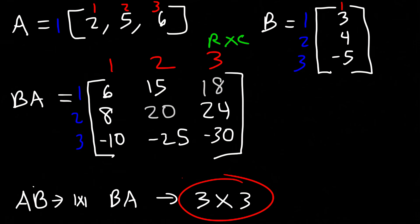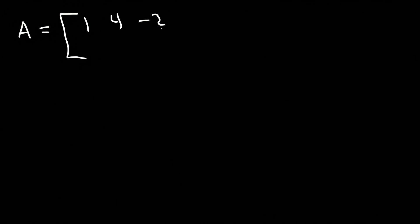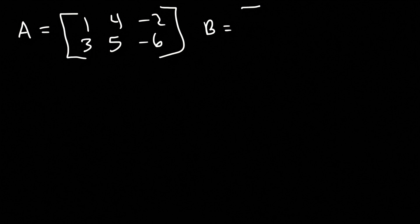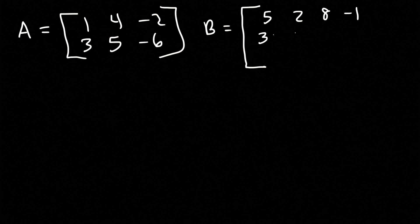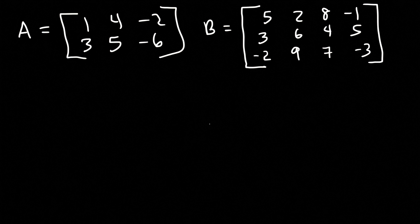Hopefully that example gave you a good idea of how to multiply matrices. Now let's work on another example. Matrix A contains the elements 1, 4, negative 2, 3, 5, and negative 6. Matrix B contains the elements 5, 2, 8, negative 1, 3, 6, 4, 5, negative 2, 9, 7, and negative 3. Go ahead and multiply A times B and B times A, and determine the order of these two products.